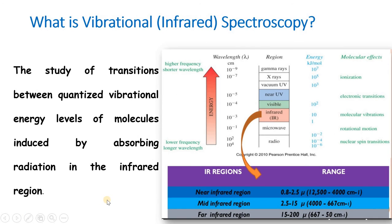Now let us see what vibrational spectroscopy is. It is the study of transitions between quantized vibrational energy levels of molecules by absorbing radiation in the infrared region. Since the radiation is absorbed in the infrared region, vibrational spectroscopy is also known as infrared spectroscopy.